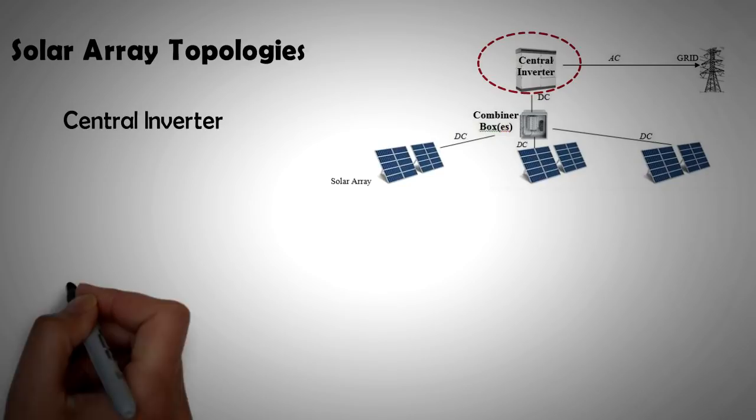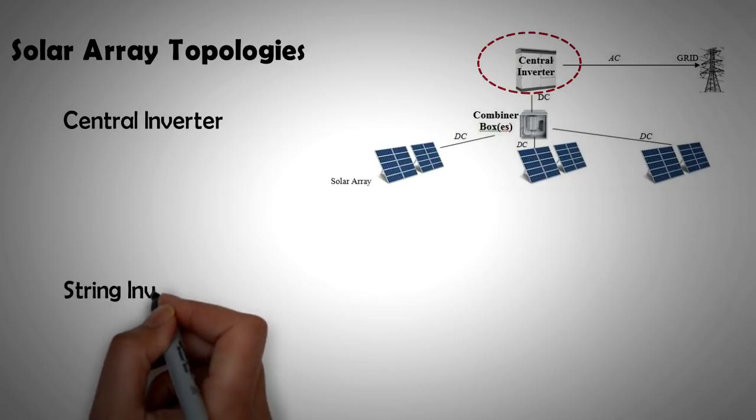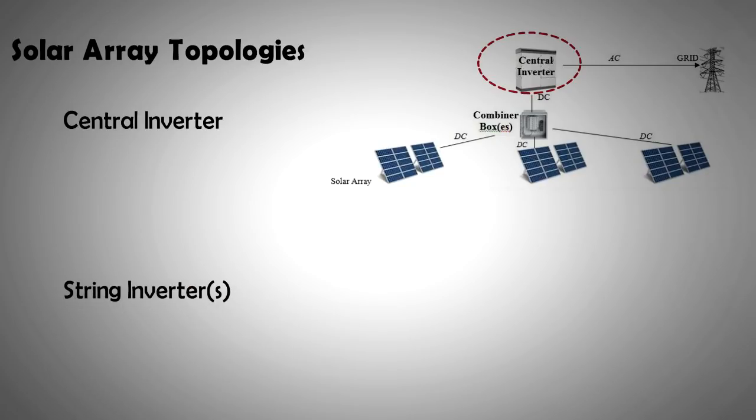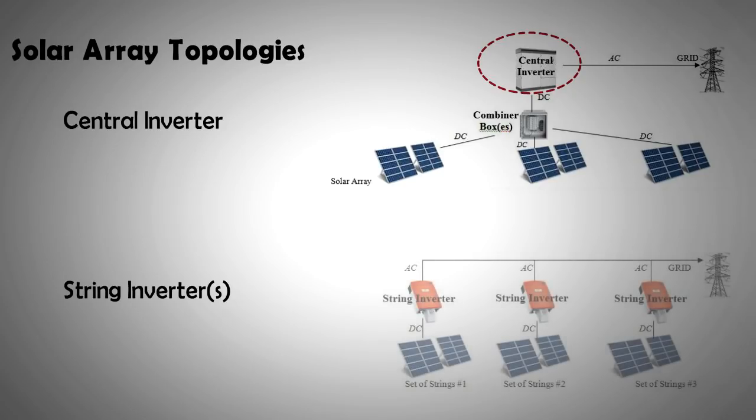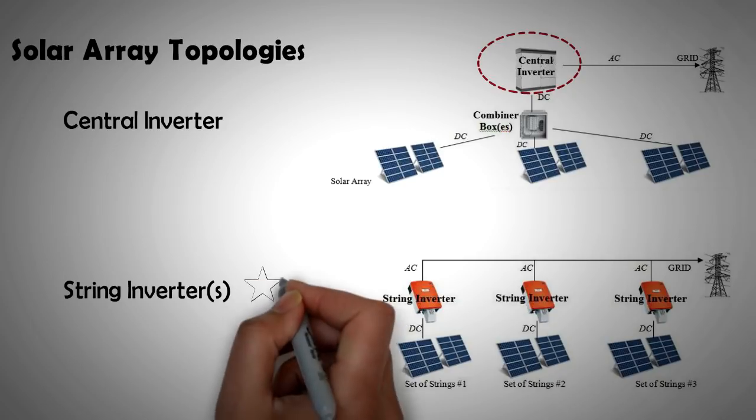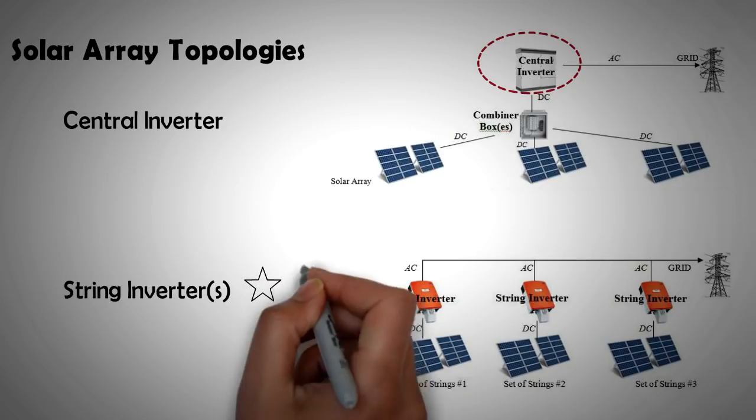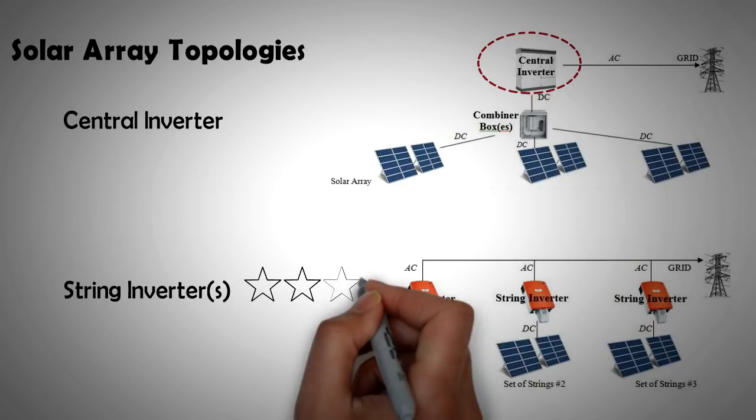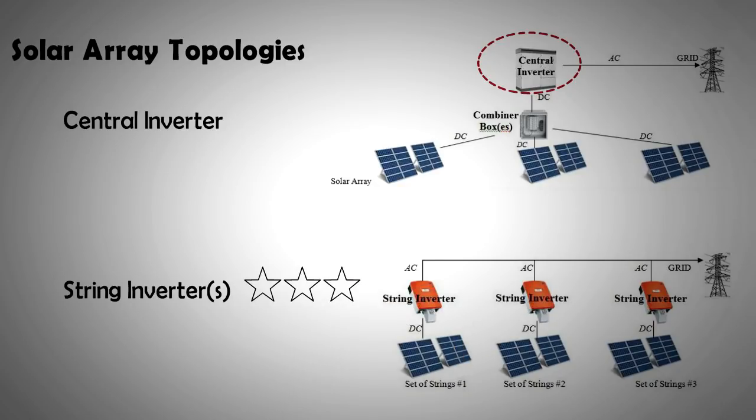The other topology in solar farms utilized several small inverters instead of a single large one. For every string of panels, there was one inverter handling the power and fed it directly to the grid. This inverter was called the string inverter. With time, it became clear that the configuration with several string inverters was much better than the central inverter configuration in terms of efficiency, even though the upfront costs were higher.